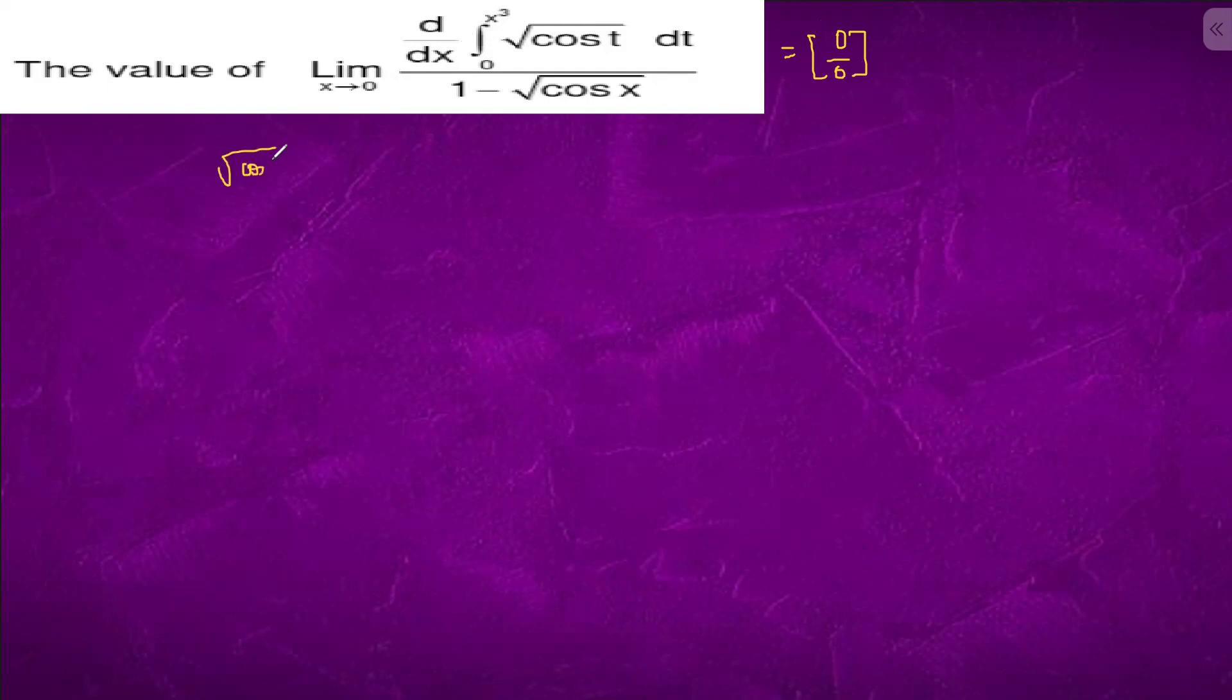It will come out to be cos(x³) · 3x². The differentiation will be 1 - √cos x. Limit x tending to 0, we will apply L'Hôpital's rule. This is 0 by 0 again.